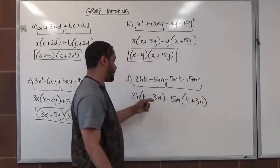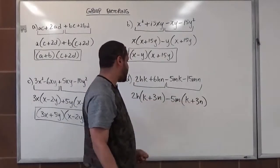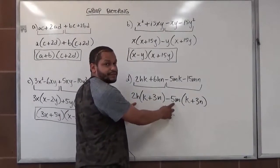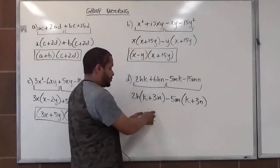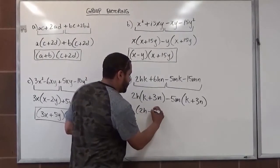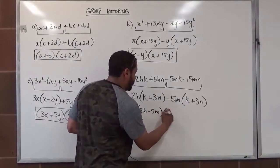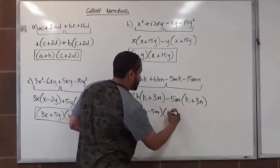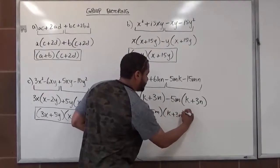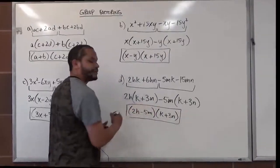We take 2H and negative 5M, join them together in the first set of parentheses, multiplying by the common factor K plus 3N. So we have (2H − 5M)(K + 3N), and there we have the group factor method for this problem.